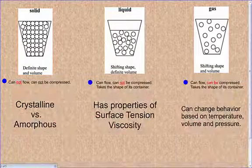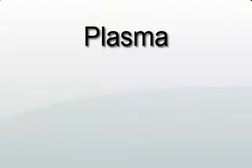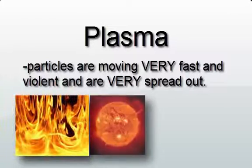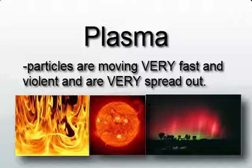There is one other state of matter after gas and that's called plasma. In the plasma state, the particles are shaking very violently and they're very spread out. So it's kind of like gas, but those particles are spaced even further apart. Examples would be like fire or the sun has plasma. Aurora Borealis, which is the northern lights, that's plasma in the universe. That's the really high state of matter. We're never going to really play around with it in our lab, but there is one other state of matter and it's called plasma.